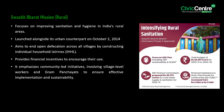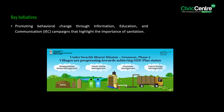The Swachh Bharat Mission Rural, also referred to as SBM Rural, focuses on improving sanitation and hygiene in India's rural areas. Launched alongside its urban counterpart on October 2, 2014, SBM Rural aims to end open defecation across all villages by constructing individual household latrines, and also provides financial incentives to encourage reuse. It emphasizes community-led initiatives involving village-level workers and gram panchayats. Key initiatives include promoting behavioural change through information, education, and communication campaigns highlighting the importance of sanitation.